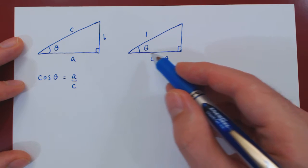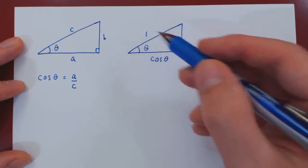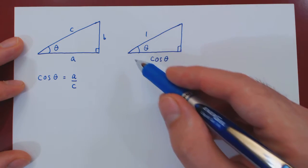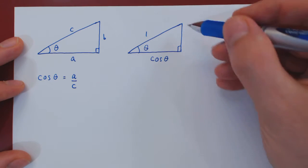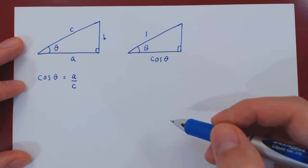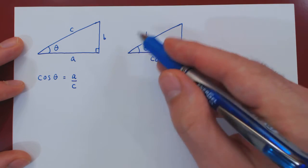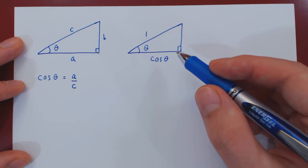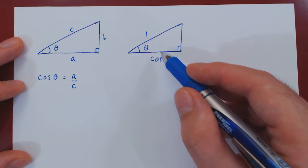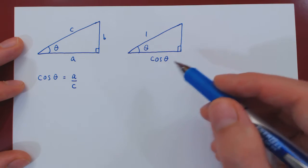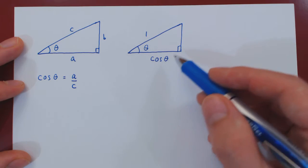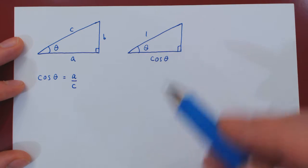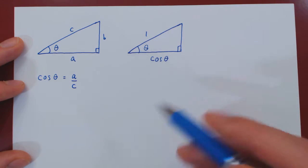Cosine of theta is the adjacent side over 1, so cosine theta over 1 is just cosine theta. Just as sine was the height of the right triangle with hypotenuse 1, cosine is the length of its base. In order to sketch a graph of cosine of theta between 0 and 2π, we inscribe this right triangle inside of a unit circle.